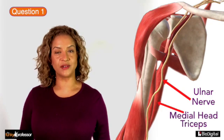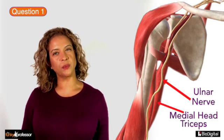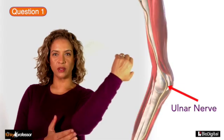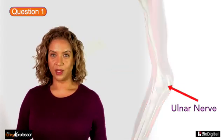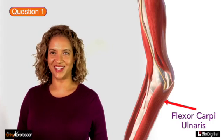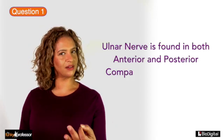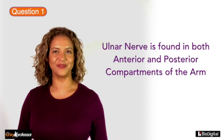Here it lies anterior to the medial head of the triceps, and then passes posterior to the bony medial epicondyle of the distal humerus to enter the forearm, between the two heads of flexor carpi ulnaris. So the ulnar nerve is a little cheeky as it lies in both the anterior and the posterior compartments of the arm.